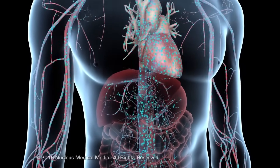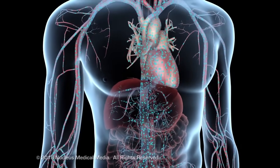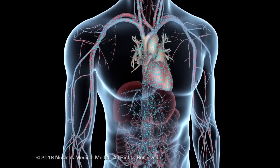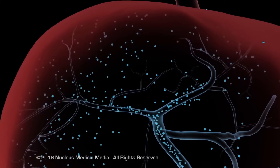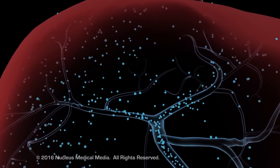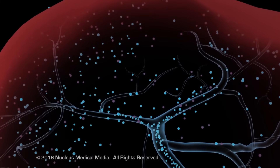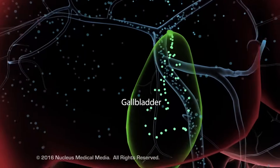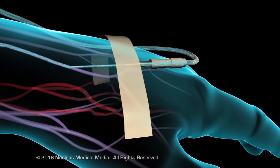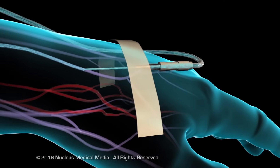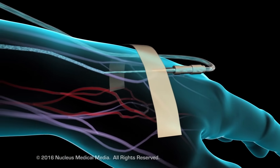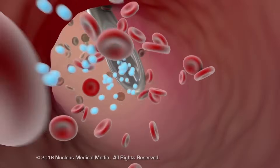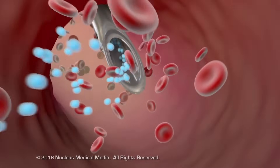Bioavailability is the net amount of a dose of a drug that is actually absorbed into the bloodstream. The bioavailability of oral drugs is less than 100% because of the first pass effect of the liver. In contrast, the bioavailability of IV drugs is 100% because they are not exposed to the first pass effect of the liver.